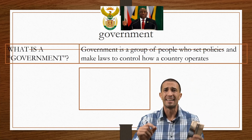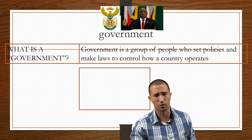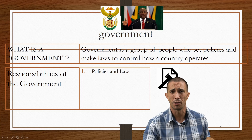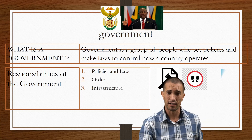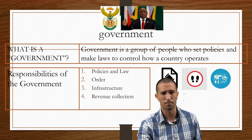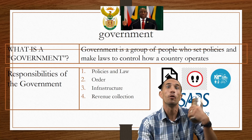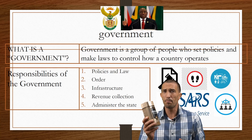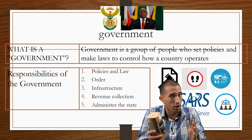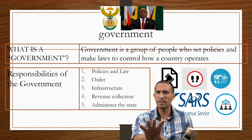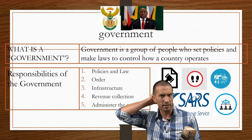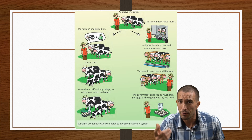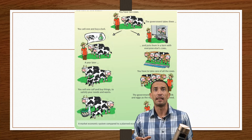We want to start off with a recap: what is a government? It's a group of people who set policies and make laws to control how our country operates. Their responsibilities include making laws and policies, creating order, ensuring infrastructure is up to date, collecting revenue to render goods and services, and administering the state. In a planned economic system, we focus a lot on the government, so keep these five responsibilities in mind.